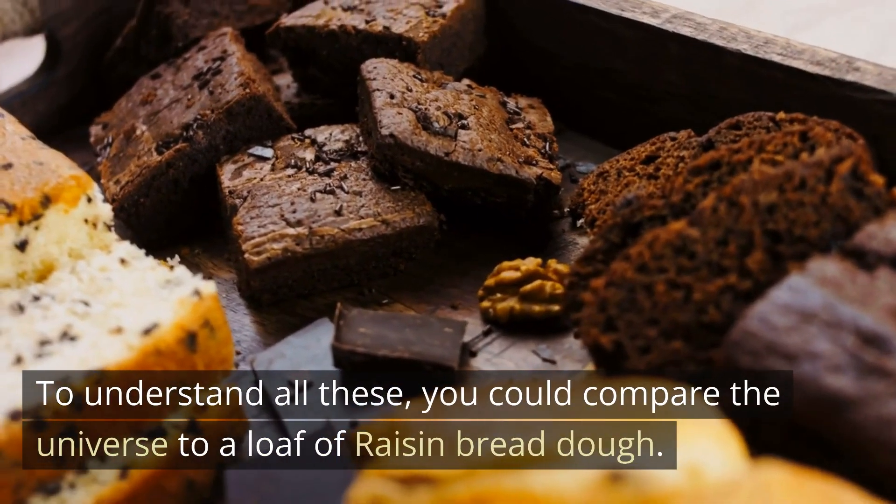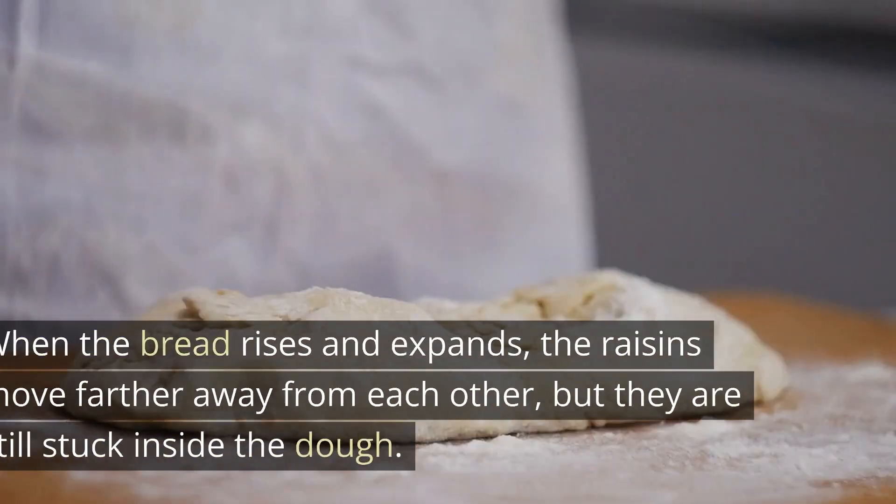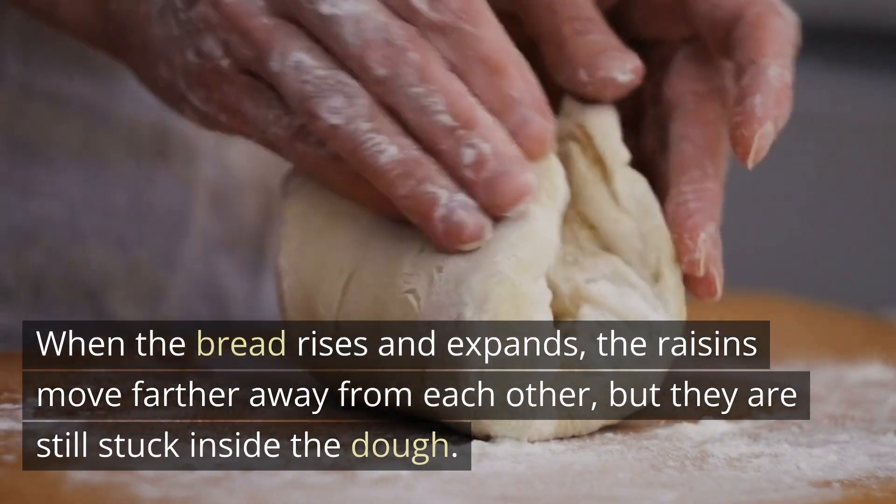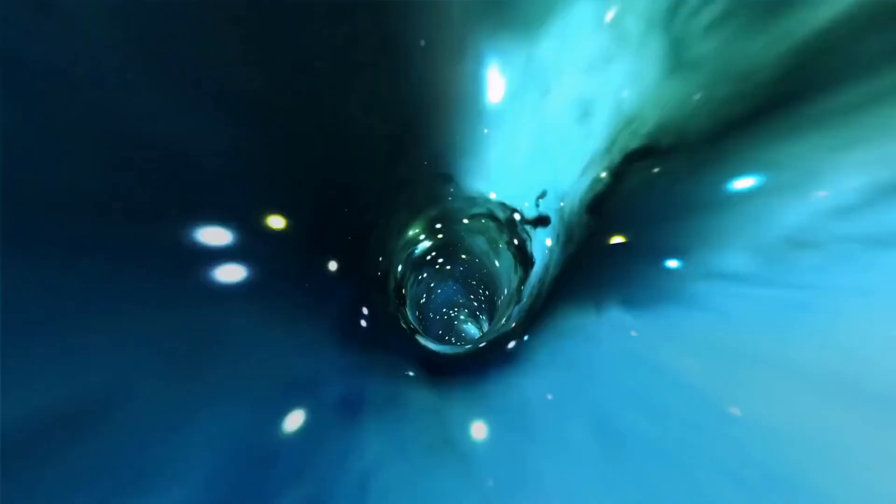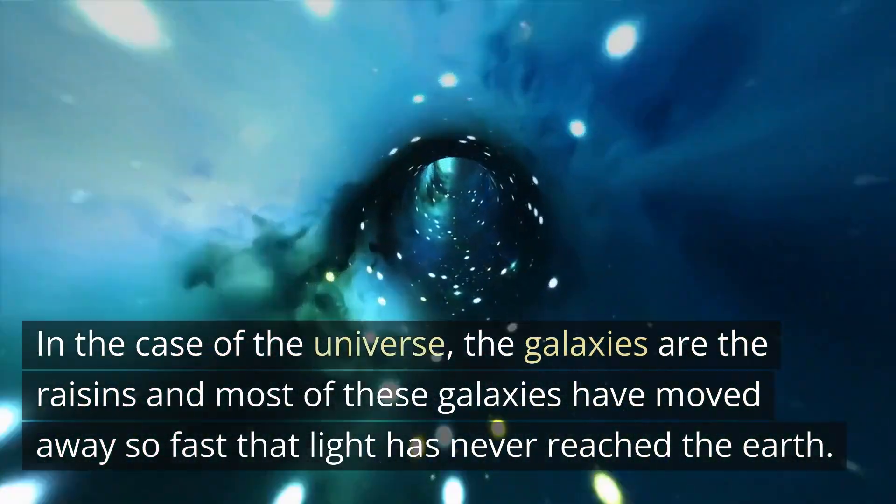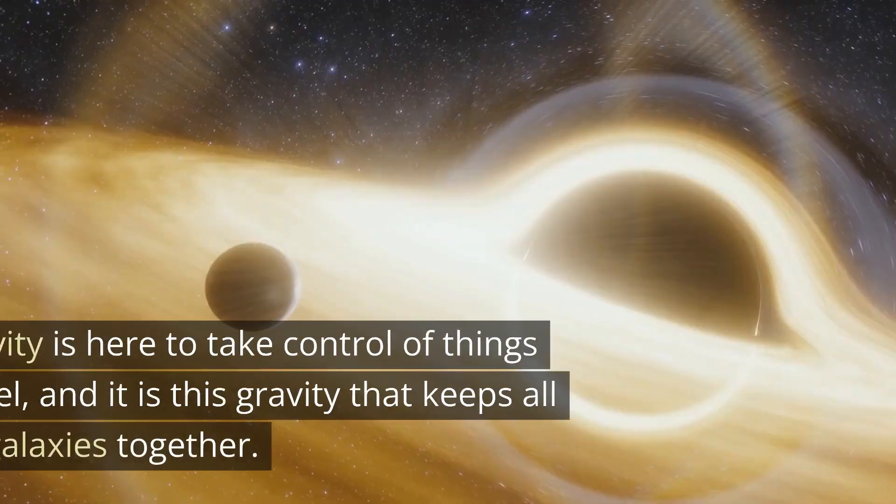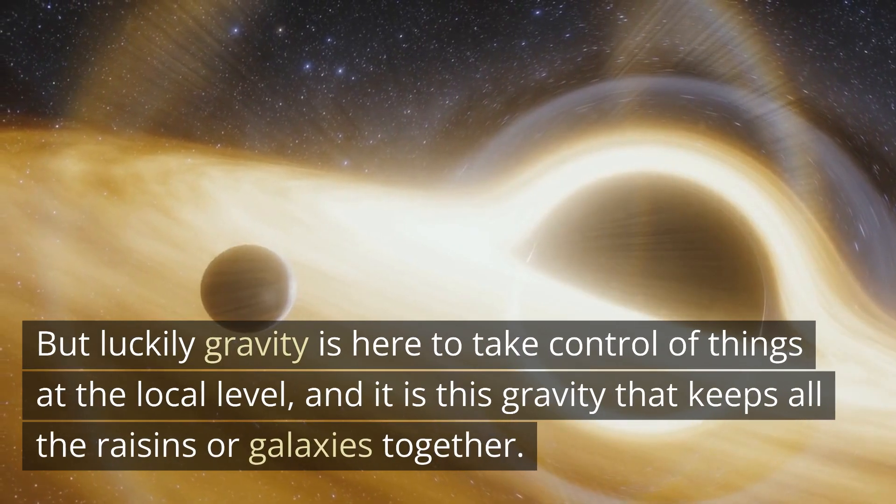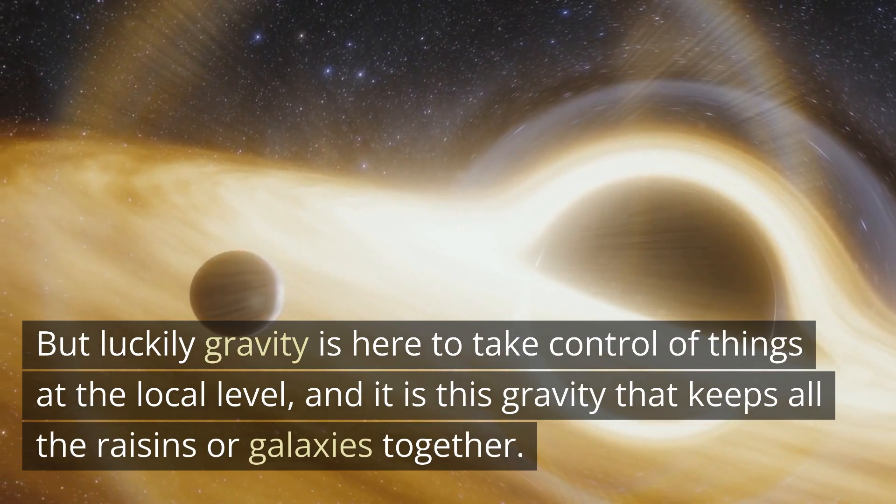To understand all these, you could compare the universe to a loaf of raisin bread dough. When the bread rises and expands, the raisins move farther away from each other, but they are still stuck inside the dough. In the case of the universe, the galaxies are the raisins, and most of these galaxies have moved away so fast that light has never reached the earth. But luckily gravity is here to take control of things at the local level, and it is this gravity that keeps all the raisins or galaxies together.